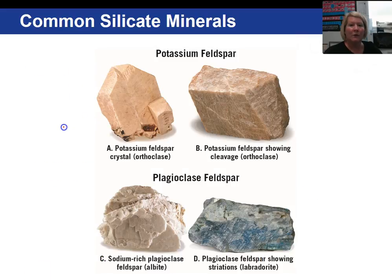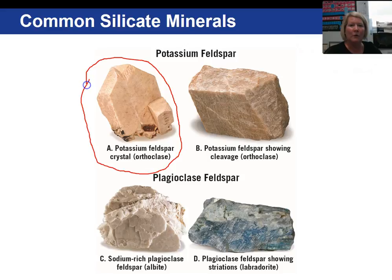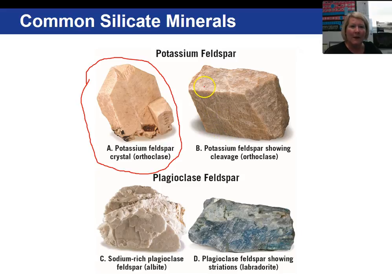This is a crystal of potassium feldspar. The most common variety is called orthoclase. Here is potassium feldspar as well — orthoclase again — showing two directions of cleavage. Here is a cleavage base and the top surface; that's your 90 degree angle. This is a fractured surface — it's not a cleavage surface.